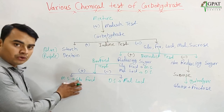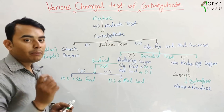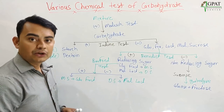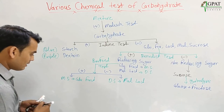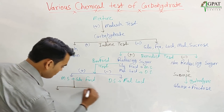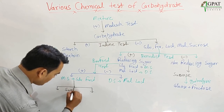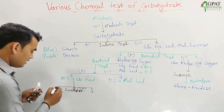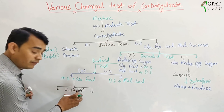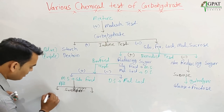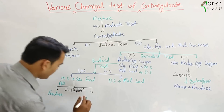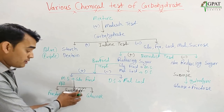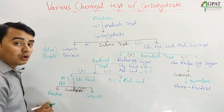Now we have to differentiate glucose and fructose. The main difference is that glucose is aldehyde in nature while fructose has a ketone group. On this we apply the Seliwanoff test. If a precipitate forms after the Seliwanoff test, it will be fructose. If no precipitate forms, it will be glucose. The Seliwanoff test is mainly used for the identification of ketone-group carbohydrates.